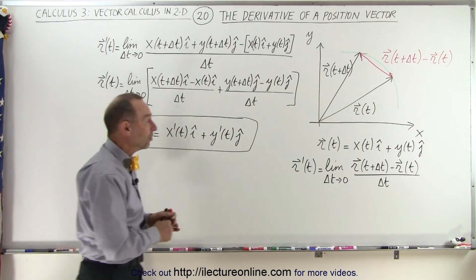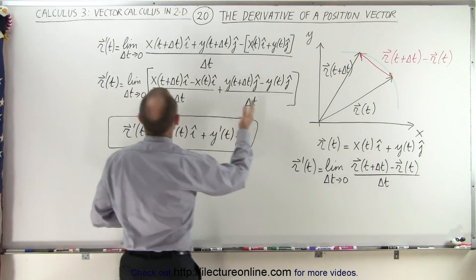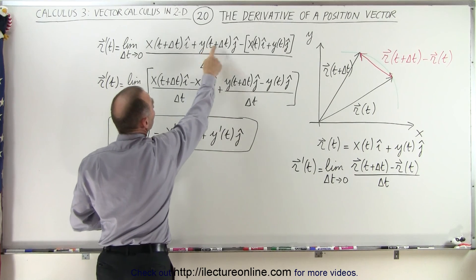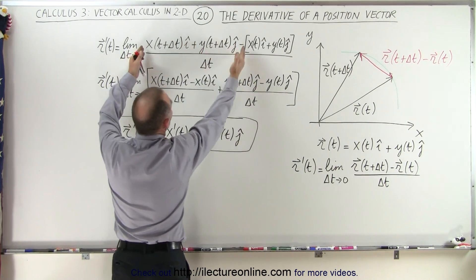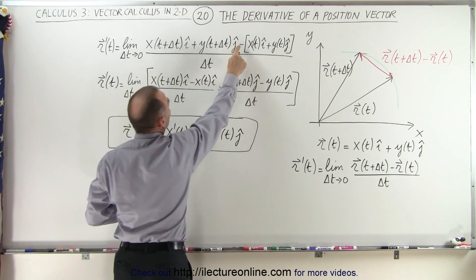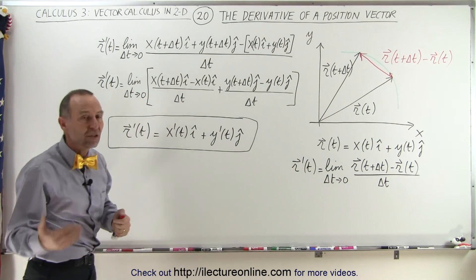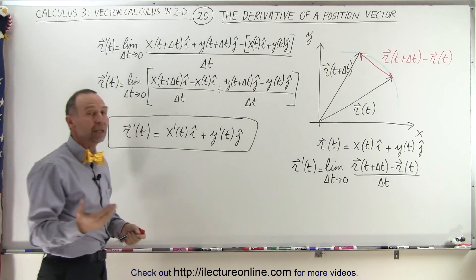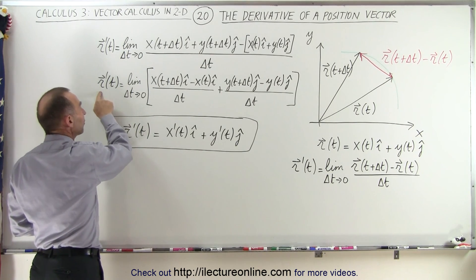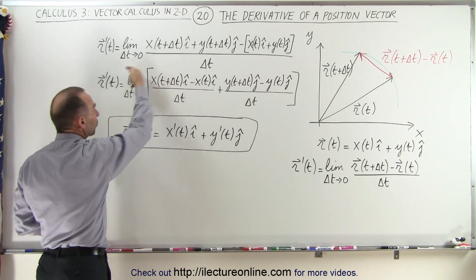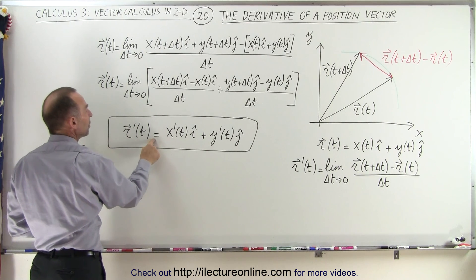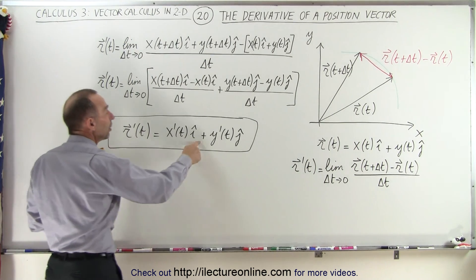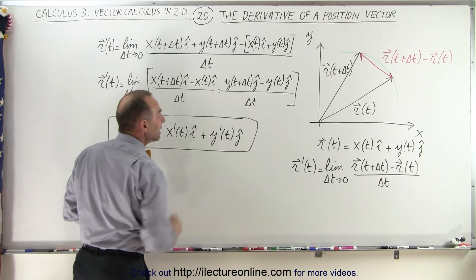If you then want to write it out: since the position vector r is defined as the x function in the i direction and the y function in the j direction, that means it will be those two functions evaluated at t plus delta t, subtract from that what the values were when t was equal to t, and divide that by delta t. You separate out the x component from the y component, and ultimately the derivative of the position vector, in the limit as delta t goes to zero, becomes this equation: the derivative of a position vector is simply equal to the derivative of the x component with respect to t, plus the derivative of the y component with respect to t in the j direction.